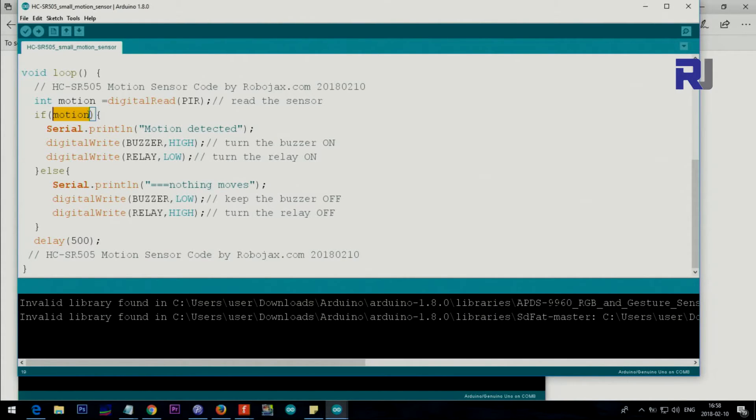If it's true then we say motion detected, and also we set the buzzer high so the buzzer will buzz. And also we set the relay low because the relay that I have is minus triggered with low.